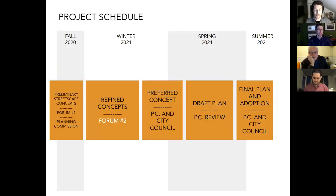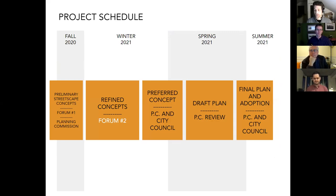So where we are on the project now — Forum 2 — this was preceded by work in October through November with preliminary streetscape concepts and Forum 1, where we looked at these concepts at a high level with community members and then took that to planning commission. Since then, we've been working on refined concepts and are in Forum 2 reviewing that. We want to get your input to take these three concepts and start to narrow down to a preferred or recommended concept.